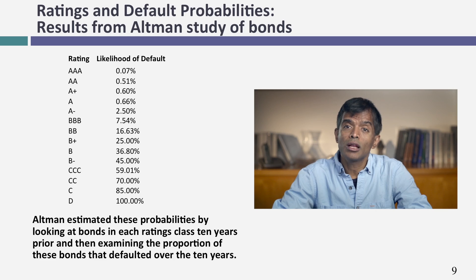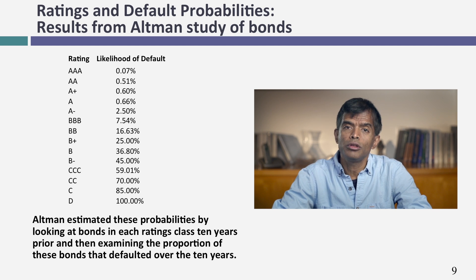If you borrow an extra 20 billion, I can compute an interest coverage ratio and a synthetic rating for your company — we did that in the cost of capital approach. If you can estimate a rating, you can convert it into a probability of default using Altman's table. For example, Disney's existing rating is single-A, and the probability of default for a single-A rated company is 0.66%. If your rating changes, you go to the table to find the new probability.